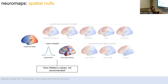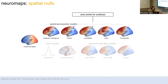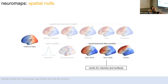The naive models give inflated p-values — not recommended. The spin test versions only work for the surface — only for the cortex. If you're interested in subcortex, brainstem, or cerebellum, it's not going to work there because it depends on having a spherical surface, which is only cortical. The parametrized versions work for both volumes and surfaces — they're more comprehensive.